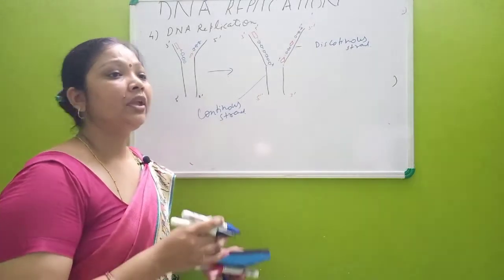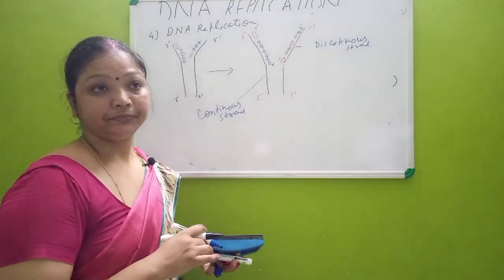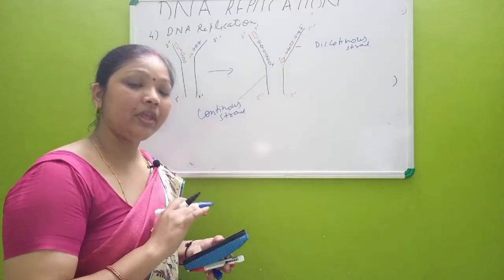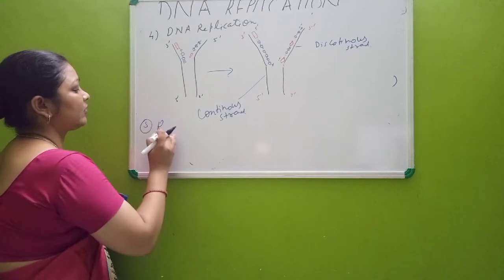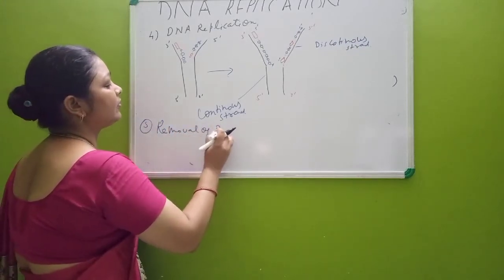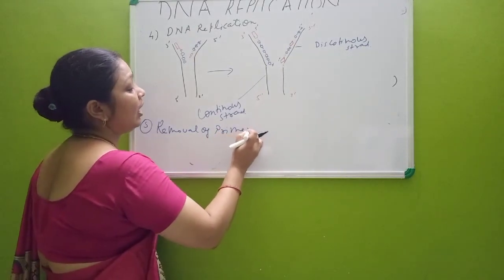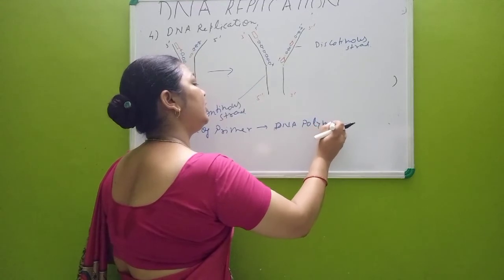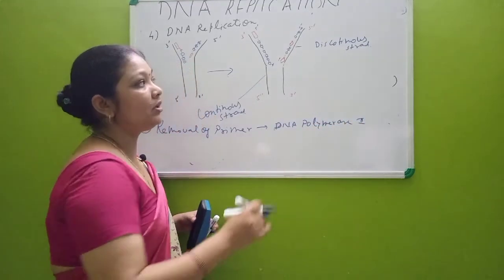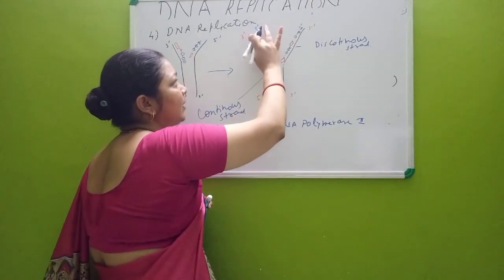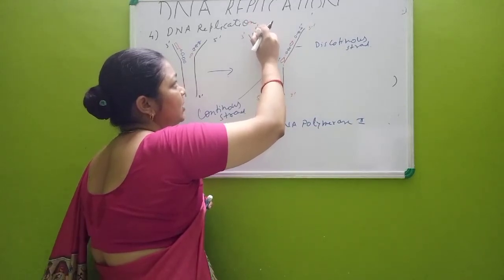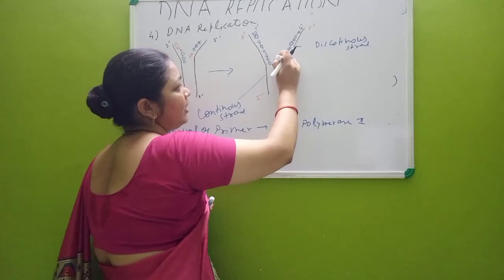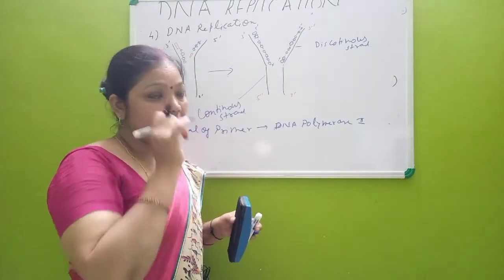The next step — the fifth step — is removal of the primers. Removal of the primers is carried out by DNA polymerase I. This enzyme removes the RNA primers and adds the subsequent correct DNA nucleotide sequence in their place.